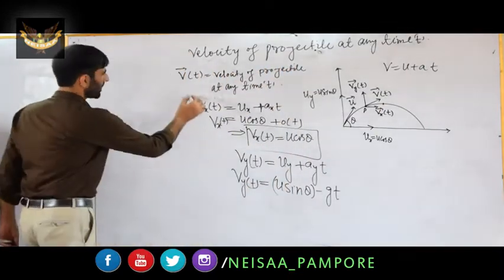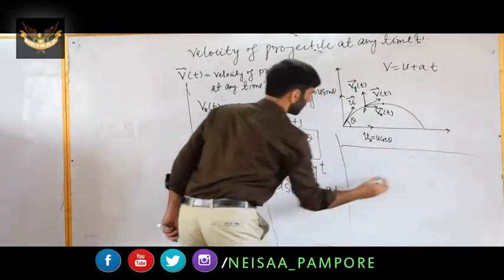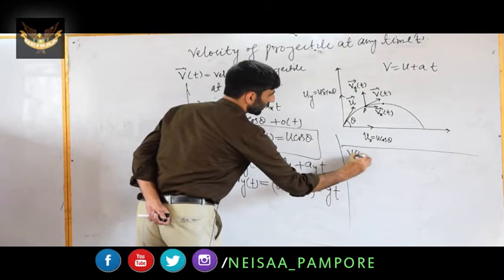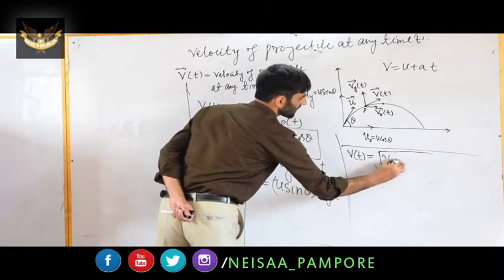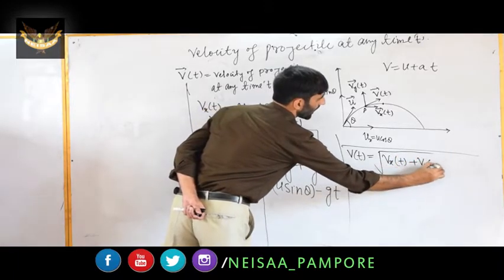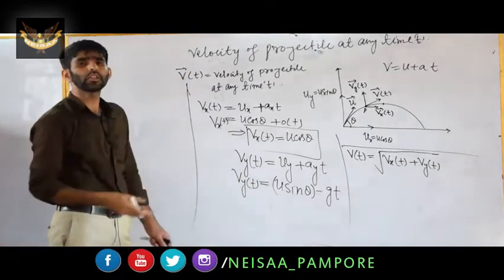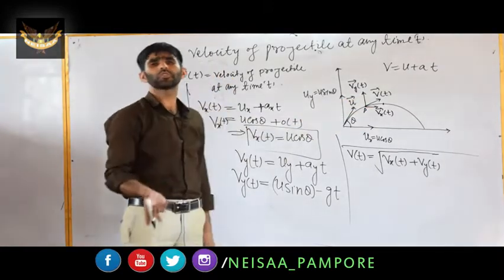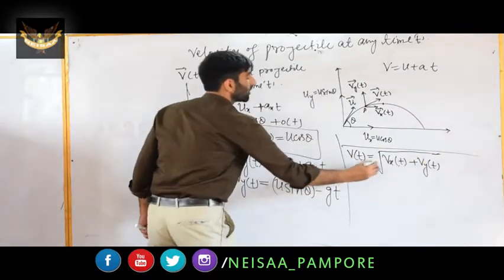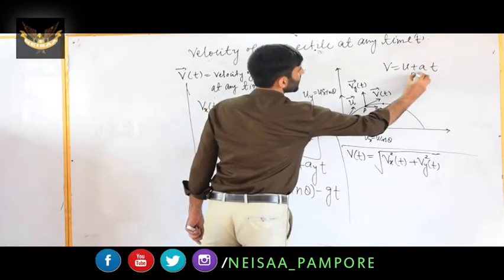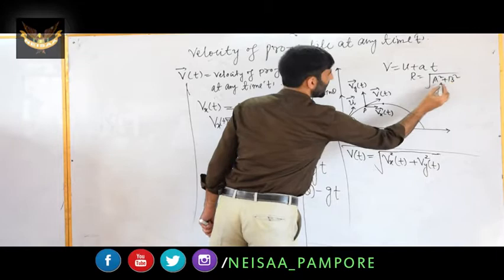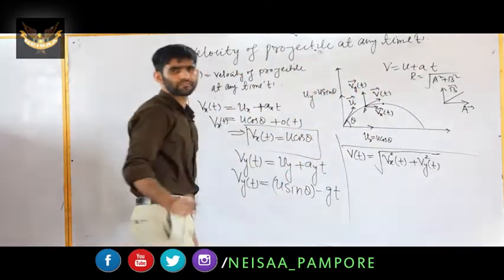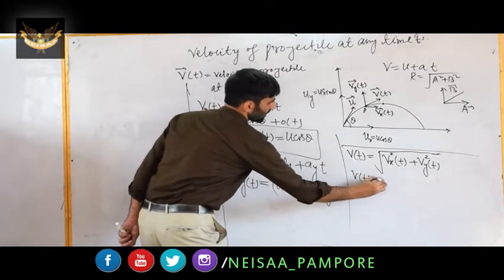The vertical component: v_y(t) = u_y + a_y·t = u sin θ − g·t. To find the resultant velocity, since v_x(t) and v_y(t) are perpendicular, v(t) = √(v_x(t)² + v_y(t)²), because the angle between them is 90° and cos 90° = 0, so the cross term vanishes.